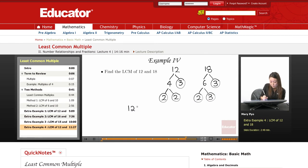So for 12, all the prime factors are going to be 2, 2, and 3. For 18, it will be 2 times 3 times another 3.